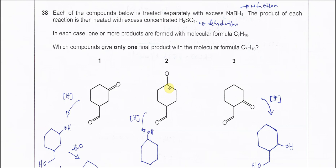Question 38. Each of the compounds below is treated separately with excess NaBH4 — sodium borohydride — which is a reducing agent, so the compound will undergo reduction first. The product of each reaction is then heated with excess concentrated H2SO4, which means dehydration. So the first reaction is reduction, the second is dehydration.